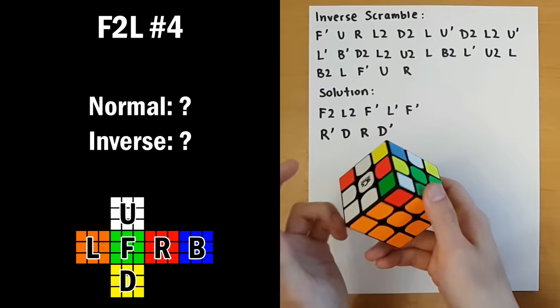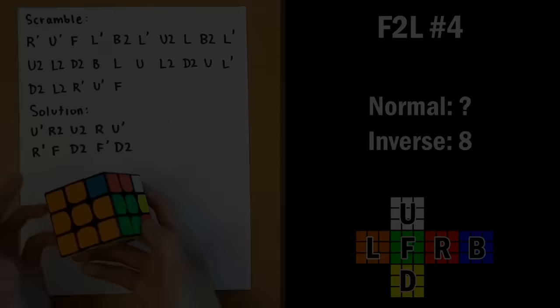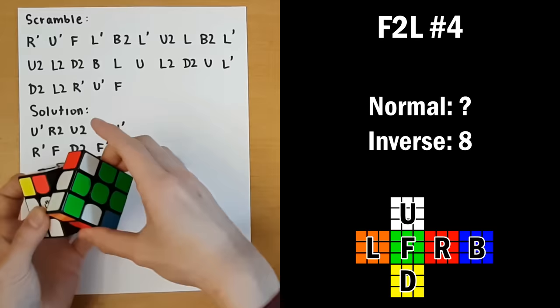Now for the last F2L slot, we have the white-green pair, and this one can be inserted in eight moves. So let's see if we can beat that on the normal scramble. So again, we're on last F2L pair, and here I noticed this and this can be done in 1, 2, 3, 4, 5, 6, 7.